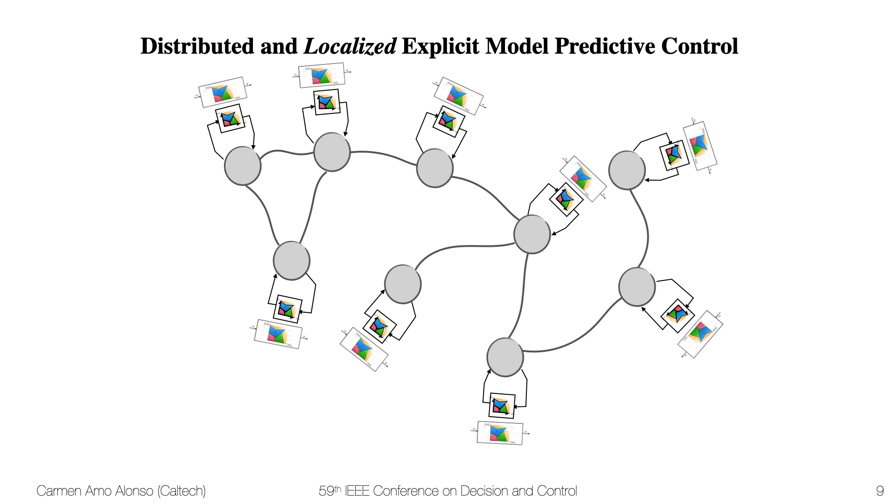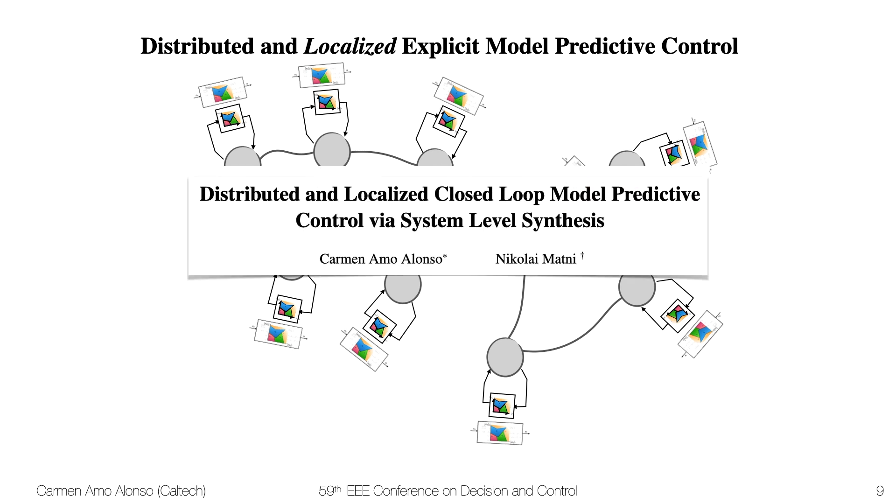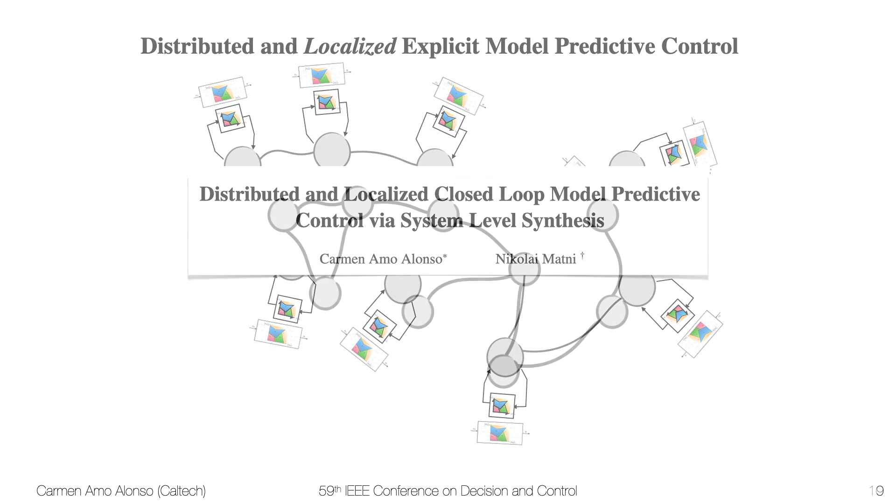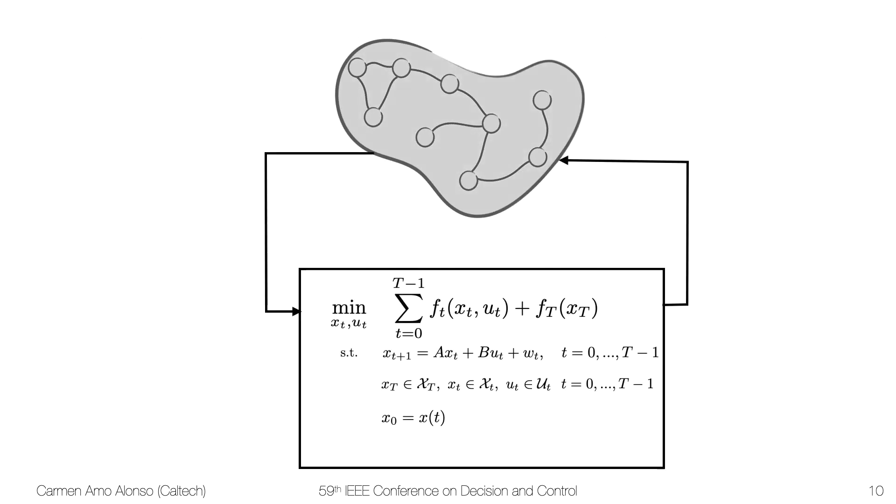We're going to use as a baseline for this work the work that I just presented in my previous talk on distributed and localized closed loop model predictive control via system level synthesis. In case anyone is interested in the details I would like to refer you to watch my previous talk as well as an extended version of that talk which you can find on my website. But just as an overview, the problem statement that we had in this setting was we wanted to compute model predictive control for a large-scale network, and since we wanted to preserve the structure of the network we introduced locality constraints.